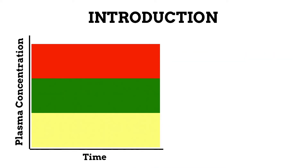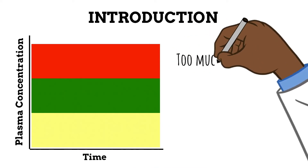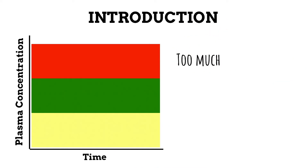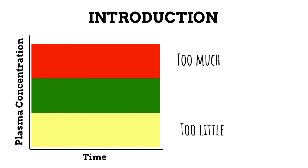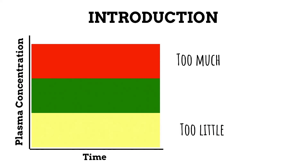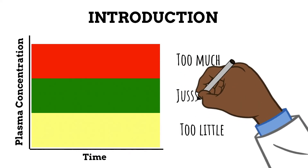So in this case, the red zone is too much. There's a lot of drug in your blood, so it's doing what it's supposed to do, but it's overdoing it to the point where you're experiencing a lot of side effects. And the yellow zone is too little — you don't have enough drug in your blood, so it's not doing what it's supposed to do and it's not causing any side effects.